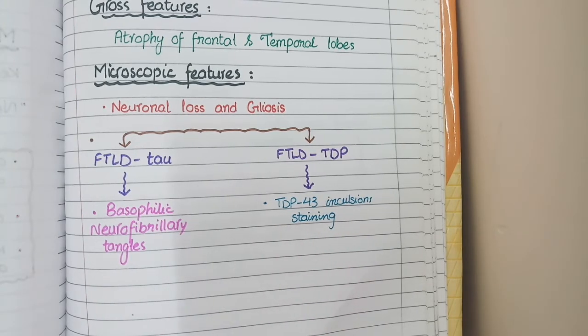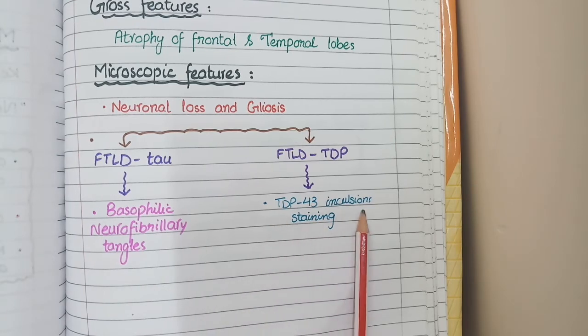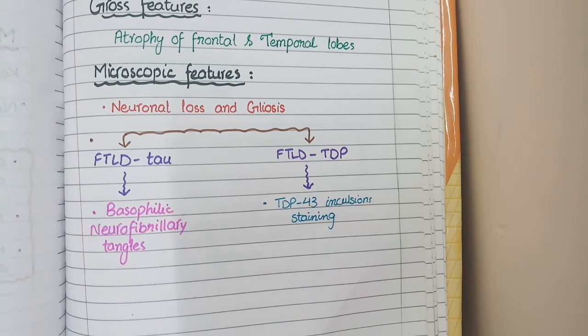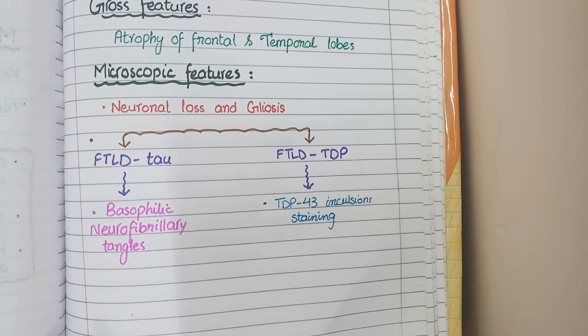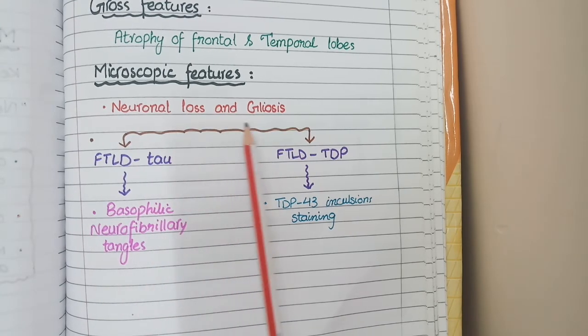TDP43 inclusions will be visible in the cytoplasm of cells. To revise the pathological features in frontotemporal lobe degeneration: there are neuronal loss and gliosis.